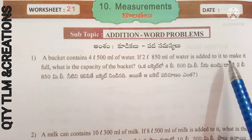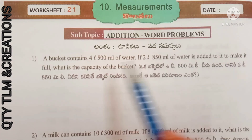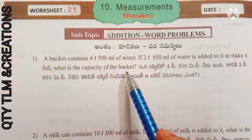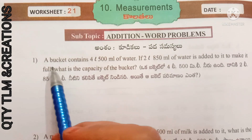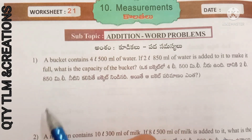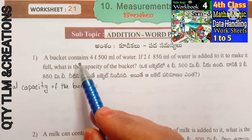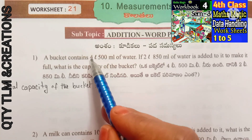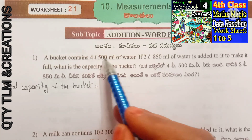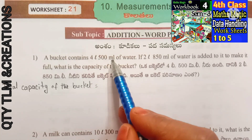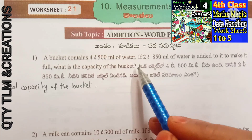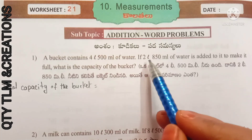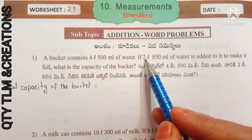Total capacity of the bucket: bucket contains water equal to 4 liters 500 milliliters, plus more water added to the bucket equal to 2 liters 850 milliliters.